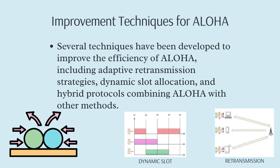Over the years, several techniques have been developed to improve the efficiency of Aloha. These include adaptive retransmission strategies, where the waiting time before retransmission is adjusted based on network conditions, and dynamic slot allocation, which adjusts the time slots based on the number of users. Hybrid protocols that combine Aloha with other methods, like Carrier Sense Multiple Access (CSMA), have also been introduced. These improvements aim to reduce collisions, increase throughput, and make the protocol more efficient in various network environments.